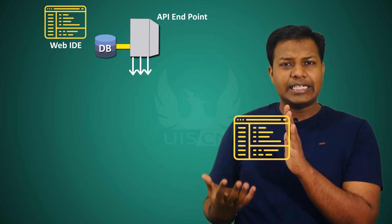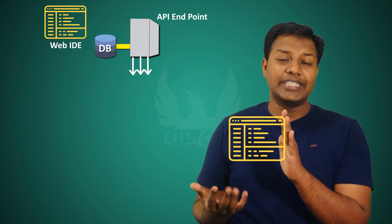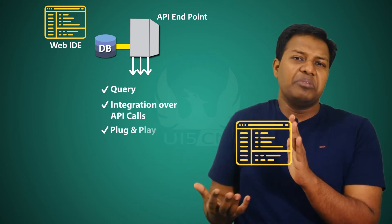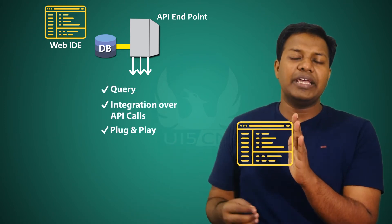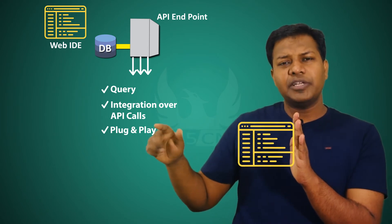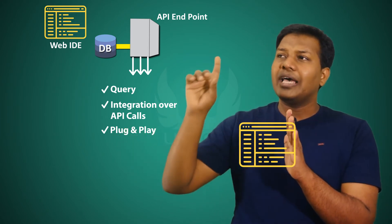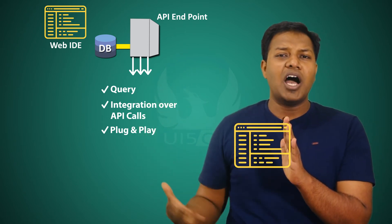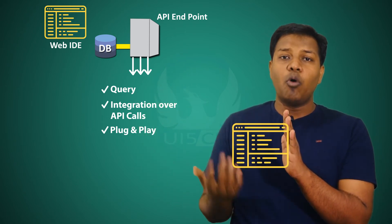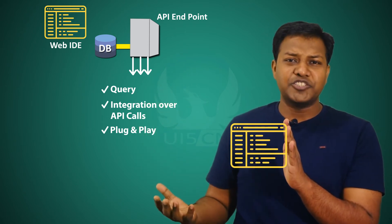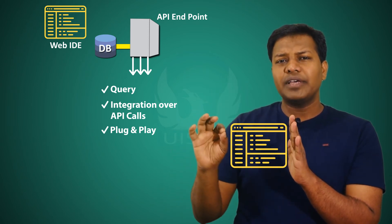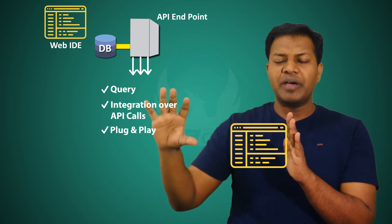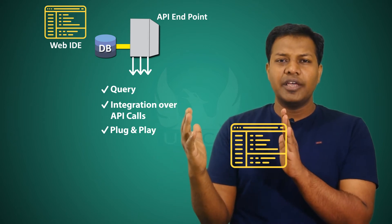This service will be responsible for exposing all the data and all the activities you can do with the data — querying the data, seeing a lot of records. For example, if I write a SELECT * statement with some filtering operations, I should be able to perform that within the service. That is how evolved API management has become.